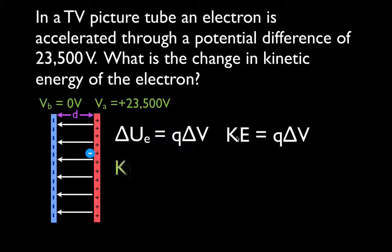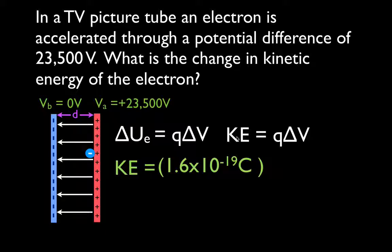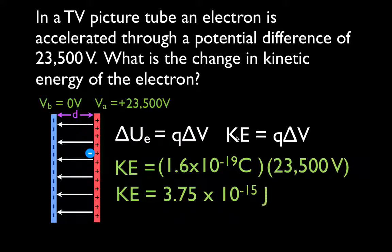All we've got to do is plug the values in. The change in kinetic energy is equal to the charge on an electron — which you can look up on your equation sheet, in your textbook, or online — times the potential difference of 23,500 volts. You multiply those together and you get 3.75 times 10 to the minus 15 joules. As that charge moved across that potential difference, it gained 3.75 × 10⁻¹⁵ joules of energy.